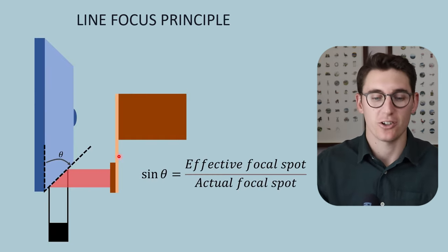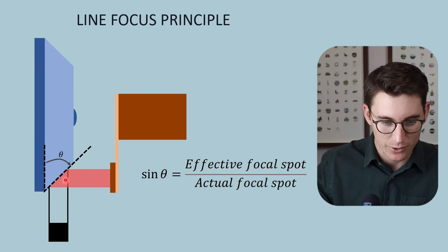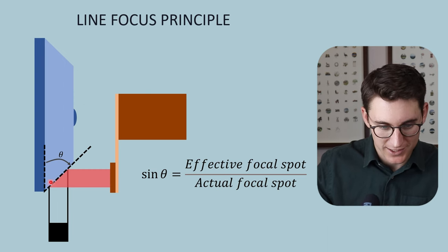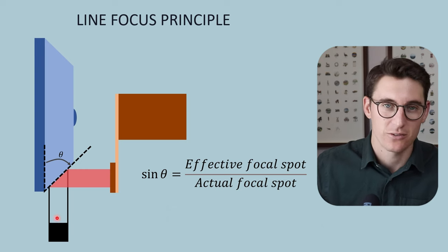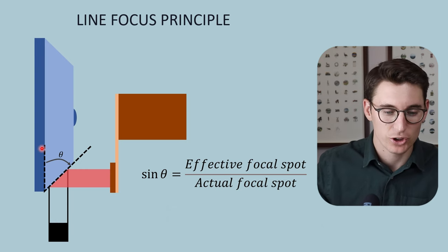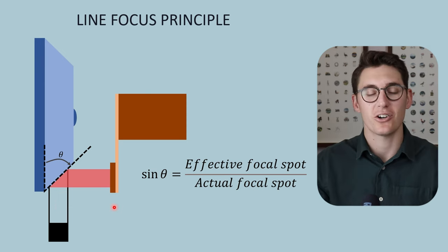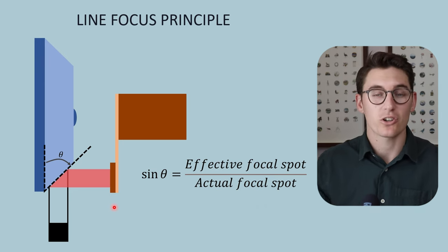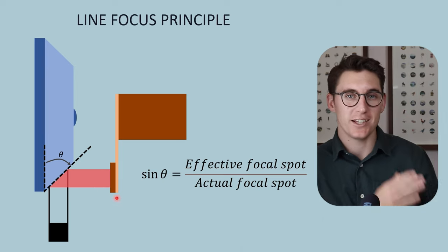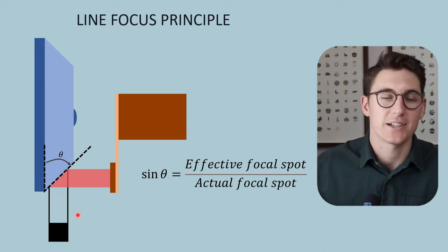Looking at this from side on in a simplified 2D diagram: we have the cathode, the electron beam, and where the electron beam contacts the anode is the actual focal spot, with the effective focal spot heading off towards the patient. The anode angle changes our effective focal spot, and there's a way we can calculate that which is known as the line focus principle. The line focus principle shows us the relationship in the longitudinal direction between our anode angle and our actual and effective focal spots.